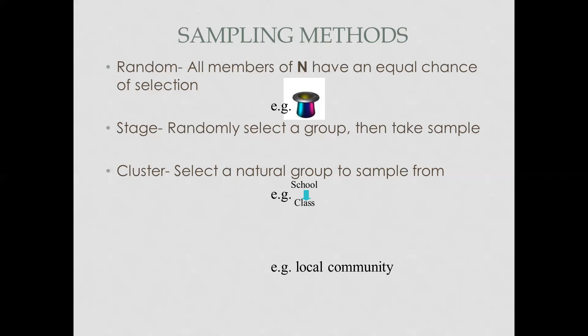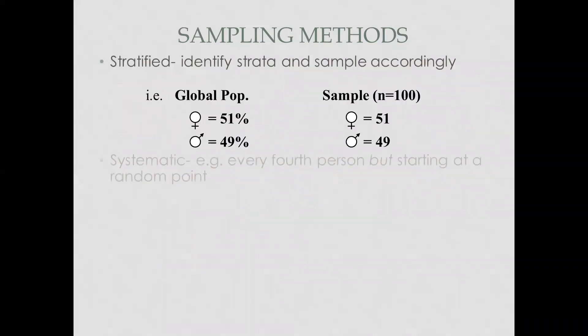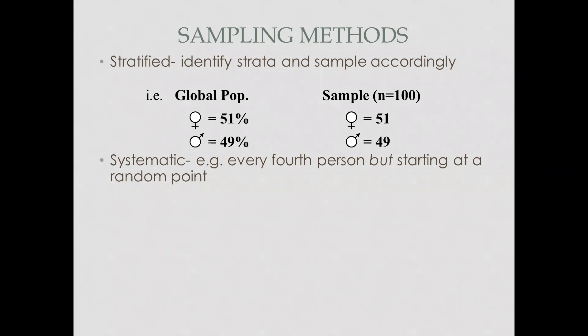Then we have stratified sampling, which involves the same method of selecting by characteristics — for example, male and female — but with equal population proportions. For instance, I'm working with 50% male students and 50% female students, so I need to select 50 boys and 50 girls. If I need to change the ratio, I can do that. Stratified sampling essentially requires equal or proportional data from each group.